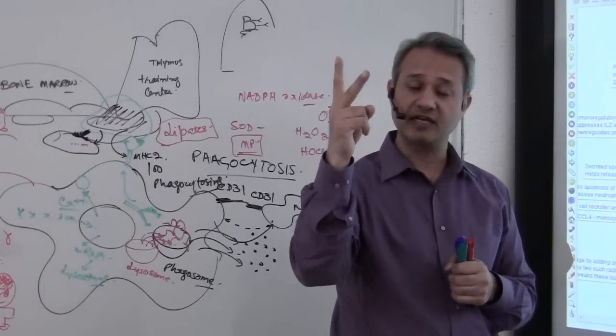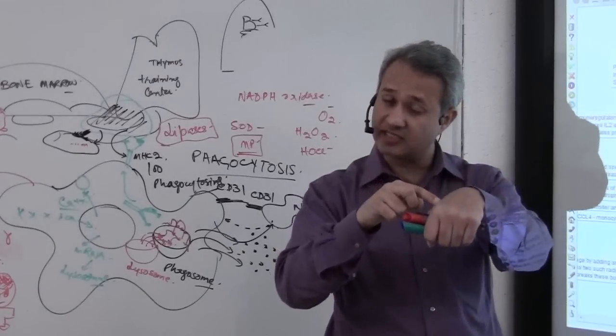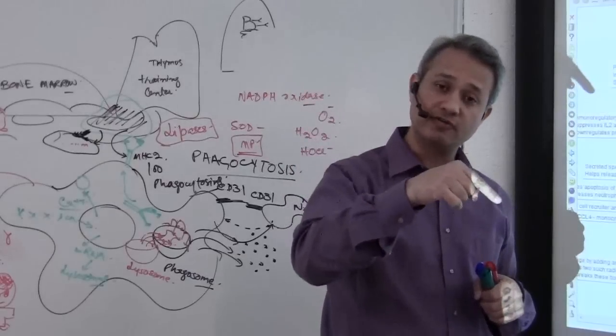First line of defense, the barrier. Second line of defense, the macrophages, resident in that area. Third line of defense are the neutrophils.